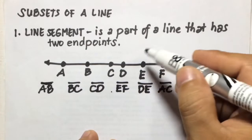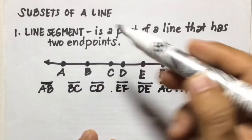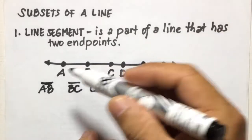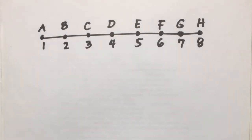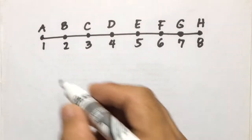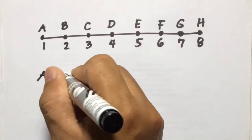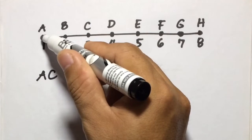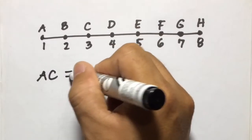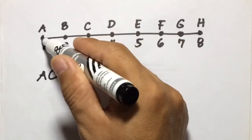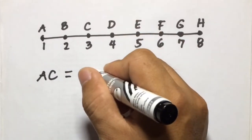There are many line segments found in this line. Again, a line segment has two endpoints. Now, if the line to which a line segment belongs is given a scale so that it becomes a number line, the length of the segment can be determined by finding the distance between its endpoints. For example, the distance of line segment AC: from A to C is 1, 2 — so AC equals two units.